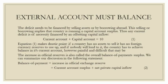Next, we talk about external account mass balance. The deficit needs to be financed by selling assets or by borrowing abroad. This selling or borrowing implies the country is running a capital account surplus. Thus, any current account deficit is of necessity financed by an offsetting capital inflow.